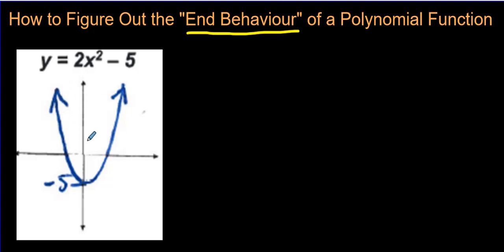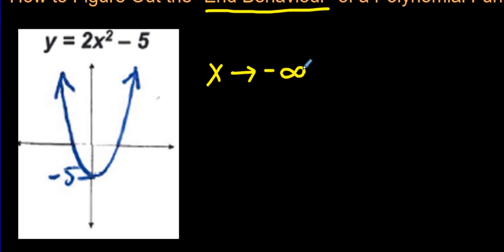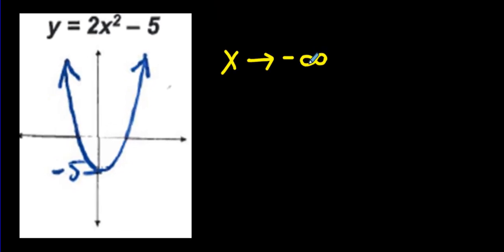So we're going to think about this, and we're going to start by writing as x, this is the notation they use, as x approaches forever left. So as x approaches negative infinity, isn't that fun? You get to write the infinity symbol. And I think the movie The Infinity Wars just came out by Marvel. Anyway, there's the infinity symbol, and it's a sideways number 8. So as x approaches negative infinity, you have to come up with what is going on with y.